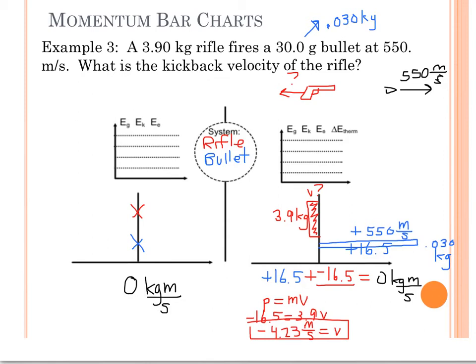If we wanted to figure out the energy for the system, we could calculate kinetic energy for the rifle. It would be one-half times the mass of the rifle, which is 3.9 kilograms, times the velocity of the rifle, negative 4.23 meters per second squared, which is 34.9 joules.